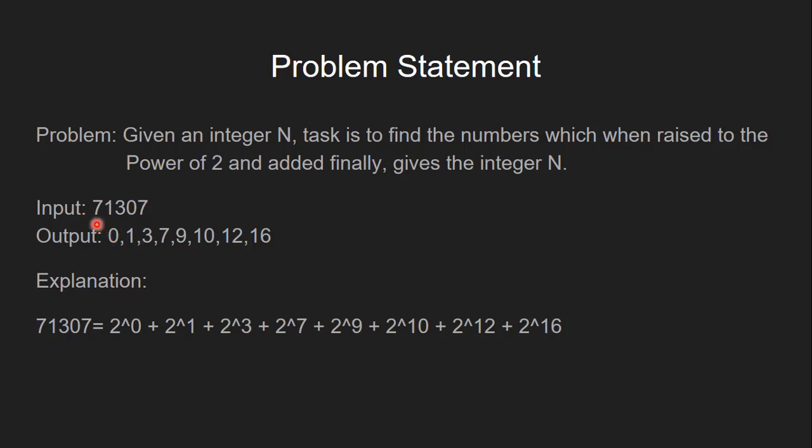For example, if input is 71,307, the output is 0, 1, 3, 7, 9, 10, 12, 16. When we raise all these numbers to the power of 2 and add them together, the result of addition will be our number n.